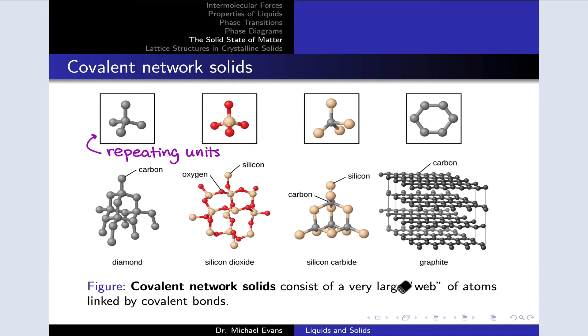Within graphite, just as a point of interest, we actually have sheets of planar or roughly planar covalent bonds. Each sheet is called graphene, and graphite itself is a stack of graphene sheets.